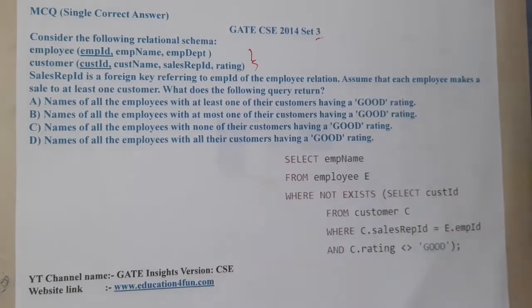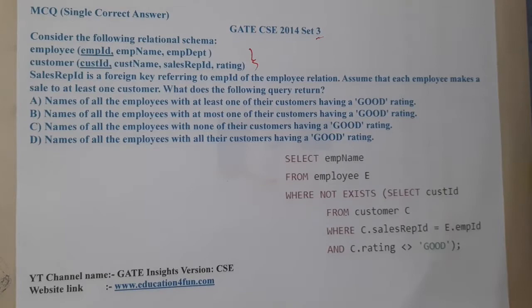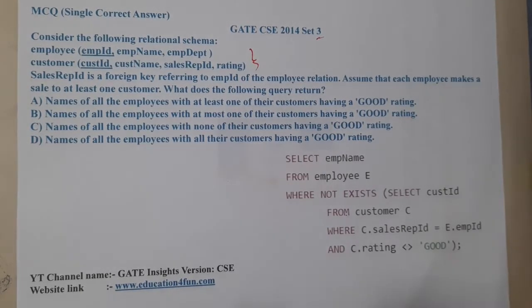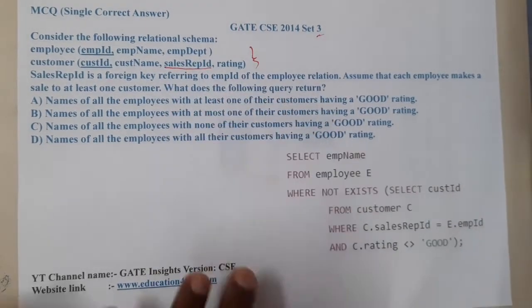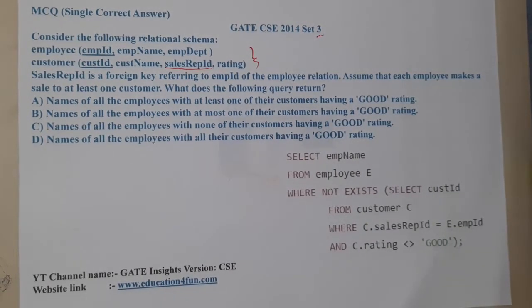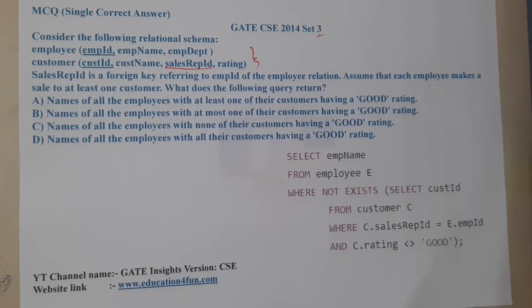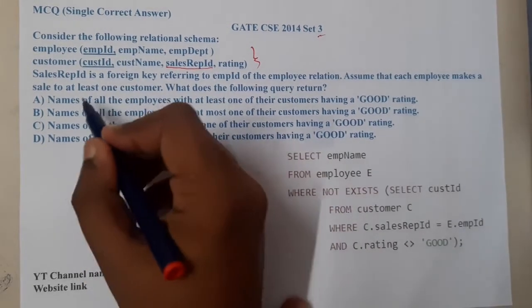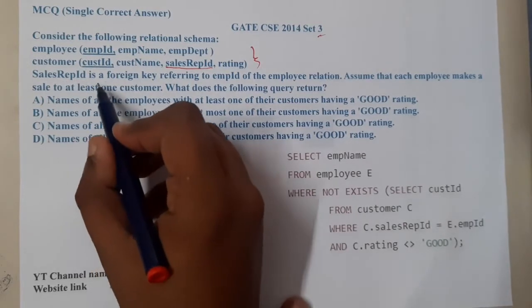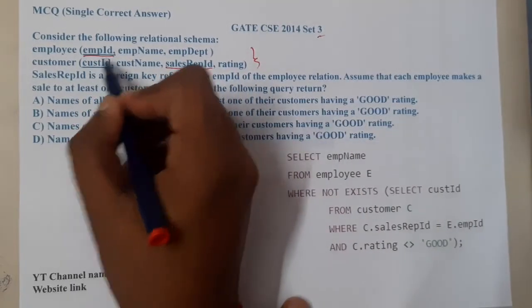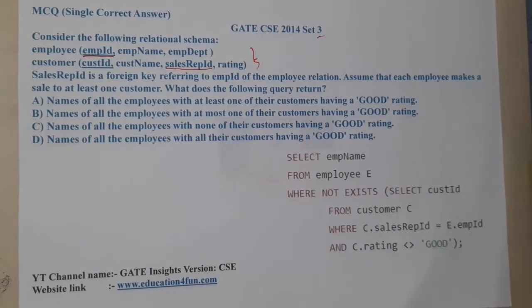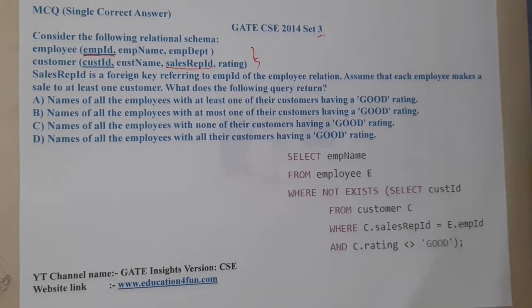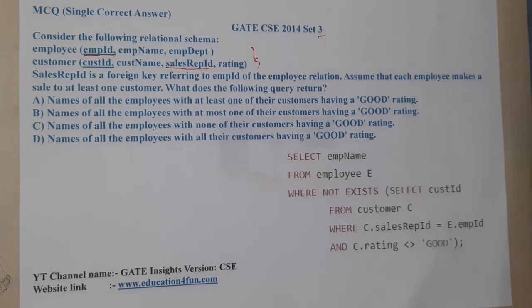This question has two tables. Sales representative ID is a foreign key — referring to employee ID of the employee relation. We should read the question first: sales representative ID is a foreign key referring to employee ID of the employee relation. Assume that each employee makes a sale to at least one customer. So what does the following query do?